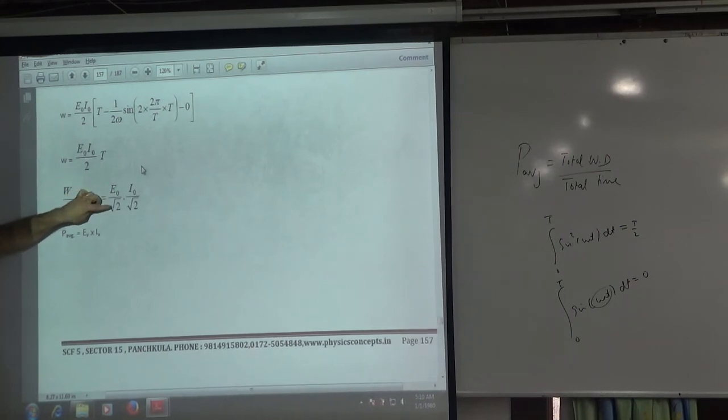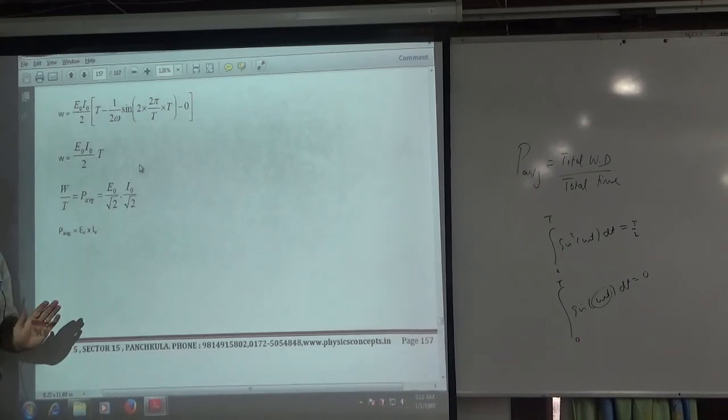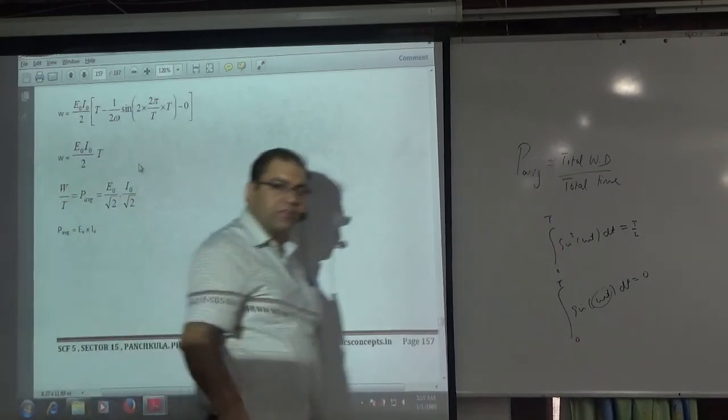Root 2, root 2. E0 by root 2. E rms. I0 by root 2. I rms. Virtual value, rms value is one thing. You can note this formula in the box. The amount of T. Two. Two.